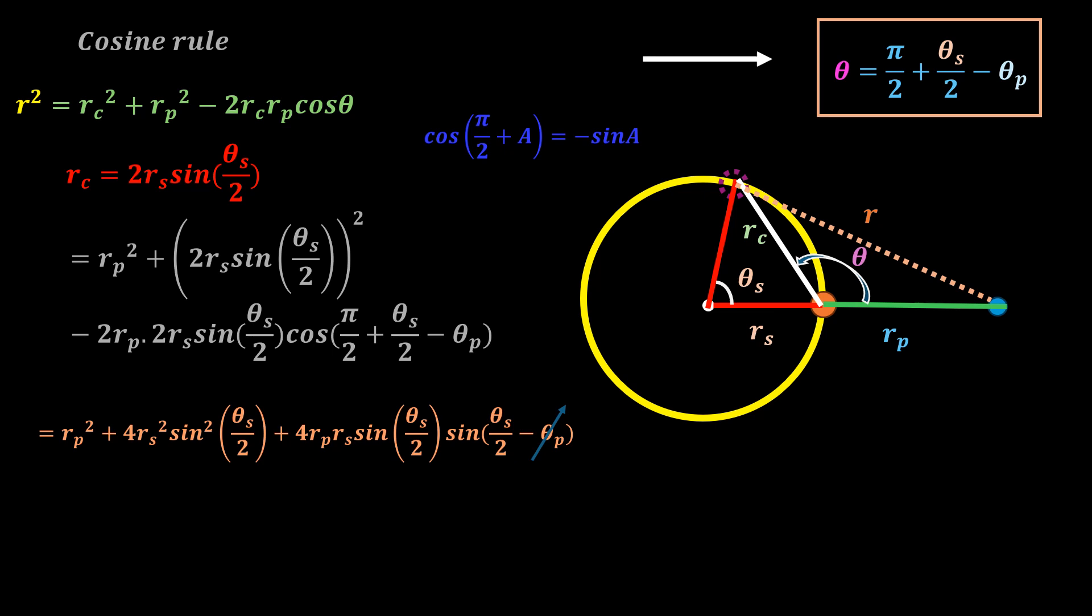Now we have sine theta s over 2 times sine theta s over 2, which is equal to sine squared theta s over 2, which is now a common factor.